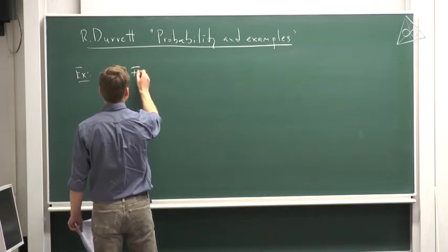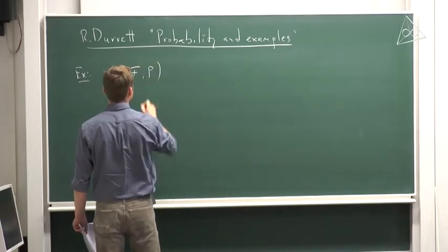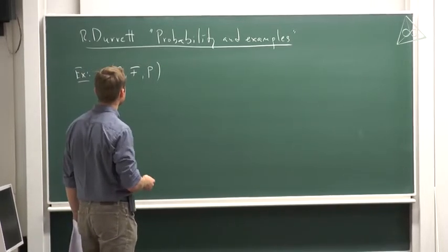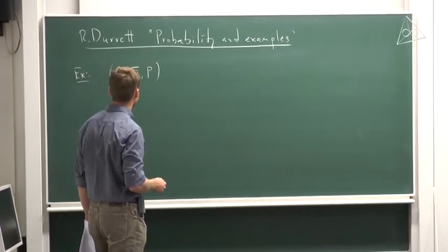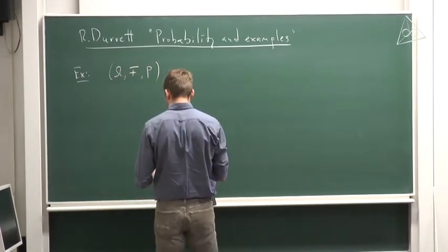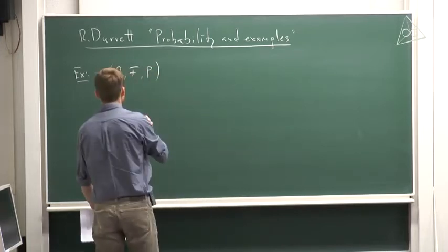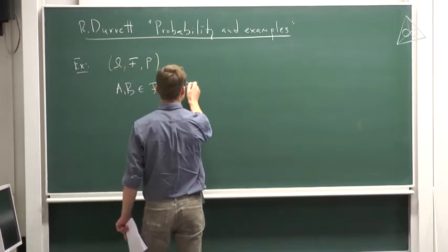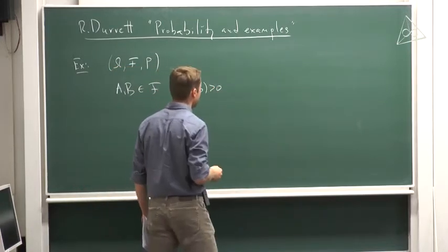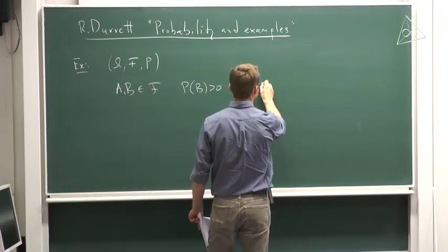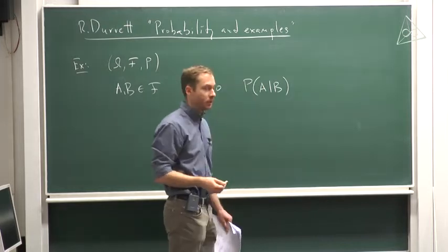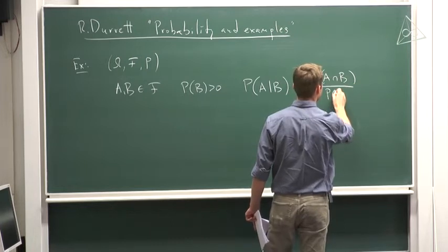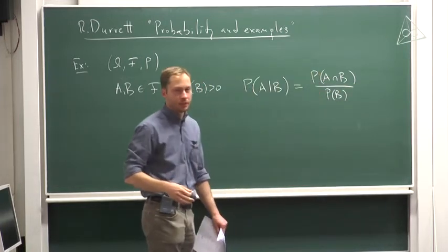As usual, I will denote by (Ω, F, P) the probability space: the state of configurations, the sigma algebra, and the probability measure on the sigma algebra. The first example I will consider: I take two events A and B in the sigma algebra such that the probability of B is positive, and I define the conditional probability of A given the event B as the probability of A intersection B divided by the probability of B.